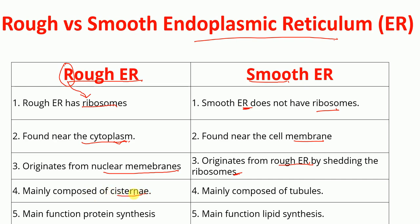In terms of structure, rough endoplasmic reticulum mainly consists of cisternae, whereas smooth endoplasmic reticulum is mainly composed of tubules. Regarding function, rough endoplasmic reticulum is mainly involved in protein synthesis because it has ribosomes, whereas smooth endoplasmic reticulum is mainly involved in lipid synthesis.